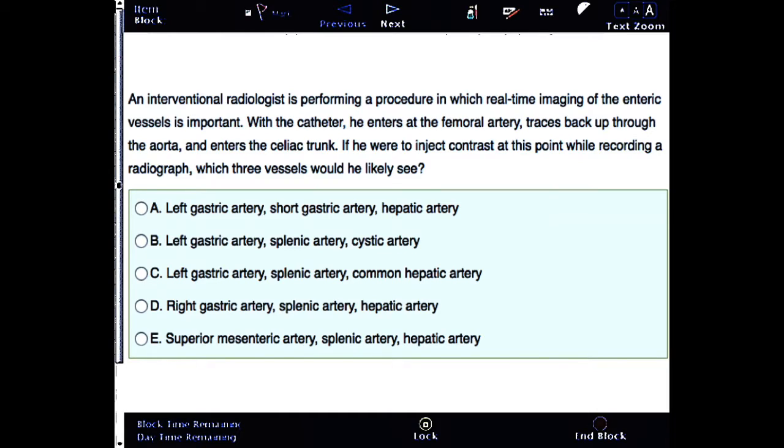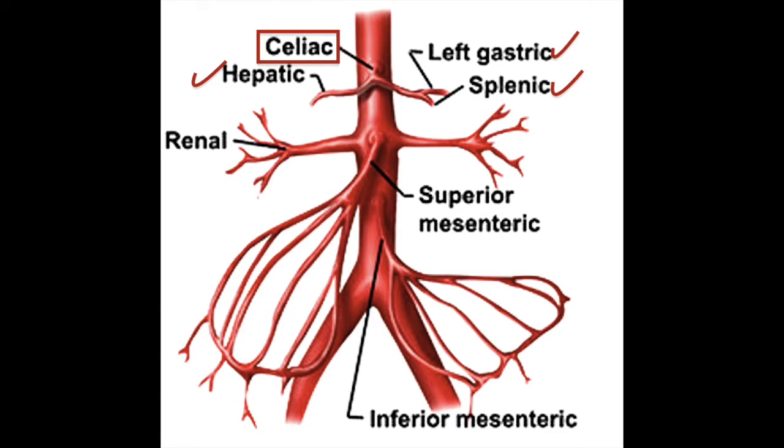Okay, so the correct answer here is C: left gastric artery, splenic artery, common hepatic artery. After entering the celiac trunk, the three vessels that the radiologist would likely see are the branches of the celiac trunk. As you see in the picture, the branches of the celiac trunk are the left gastric artery, the splenic artery, and the common hepatic artery.